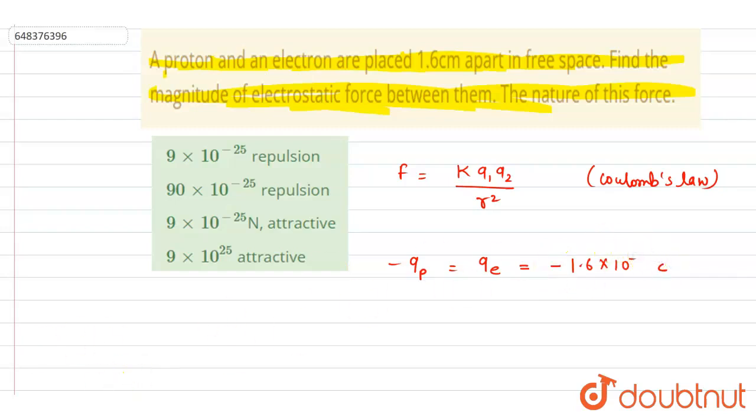You can just put the value in this expression. So we will write down the force. It is equal to K, that is 9 times 10 to the power 9, q1 q2, so it will be square of 1.6 times 10 to the power minus 19.